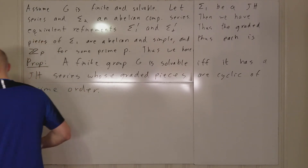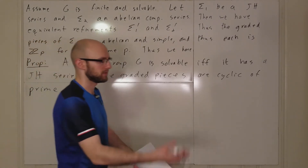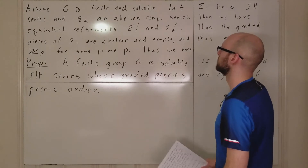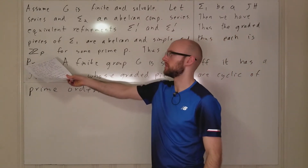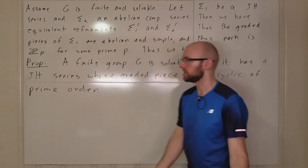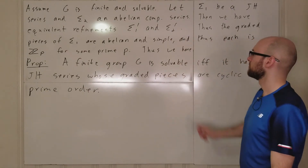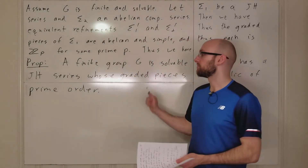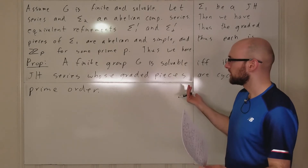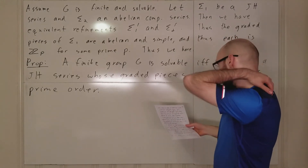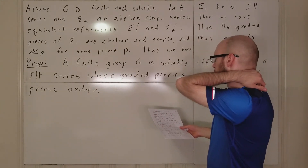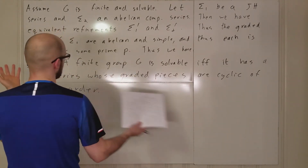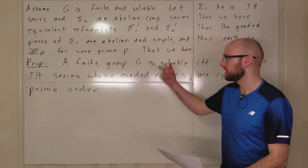There we go. So that's what we proved — we did prove that this Jordan-Hölder series has Abelian graded pieces, but then we combined Abelianity with simplicity to prove Z mod pZ-ness, so the final result was that each graded piece is Z mod pZ. The proposition is: a finite group G is solvable if and only if it has a Jordan-Hölder series whose graded pieces are cyclic of prime order, i.e., each one is Z mod pZ for some prime p. The reverse direction is trivial since each Z mod pZ is going to be simple, and obviously each Z mod pZ is Abelian, so you have an Abelian composition series, and that's all you need.